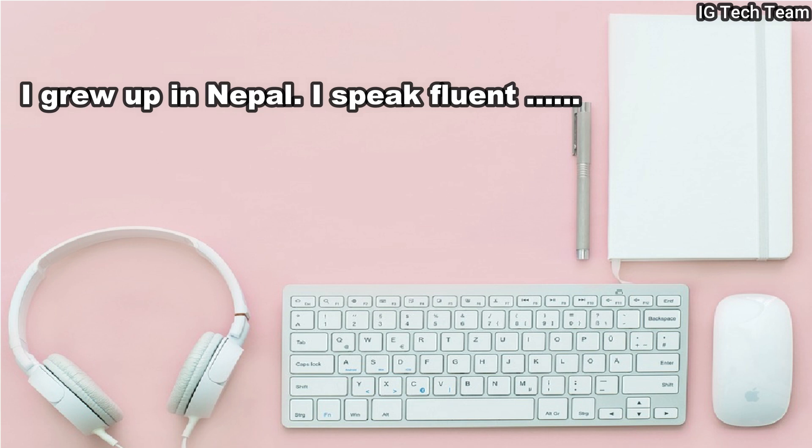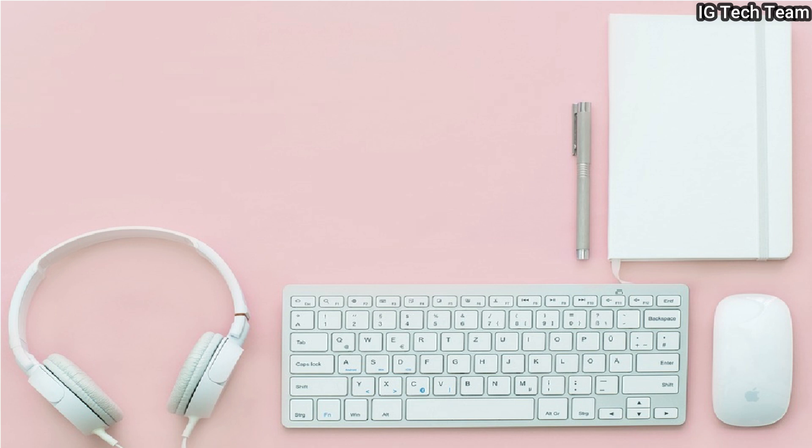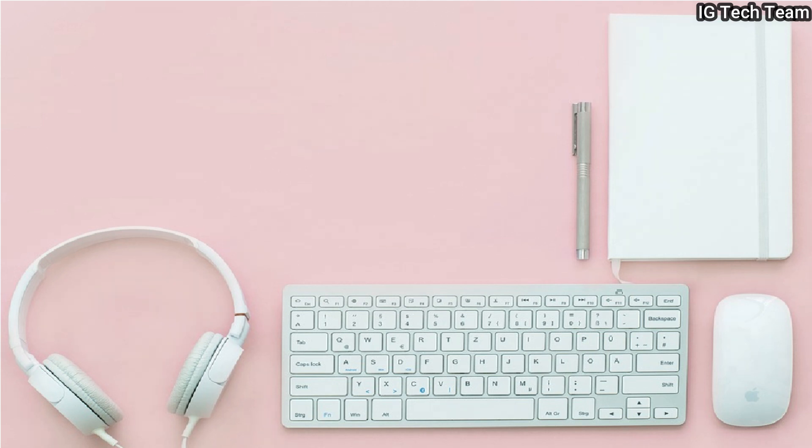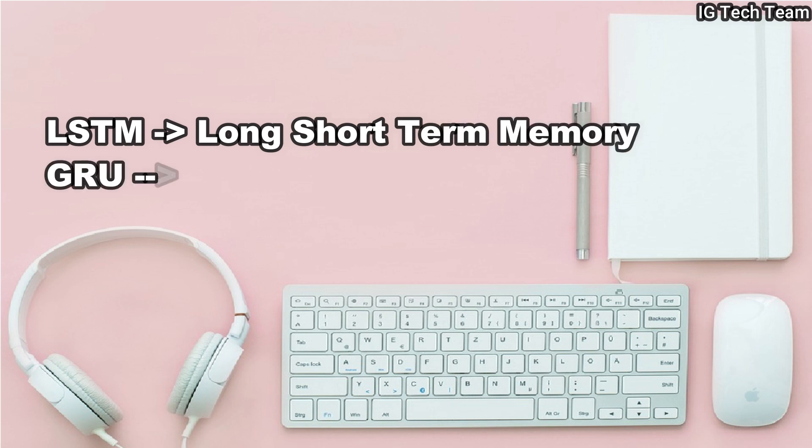To solve this problem, LSTM and GRU come into the picture. If we pass the same sentence to our LSTM or GRU model, it may return the answer as Nepalese, because obviously if a person is from Nepal, then he or she speaks fluent Nepalese. And if a person is from Japan, he or she speaks fluent Japanese.